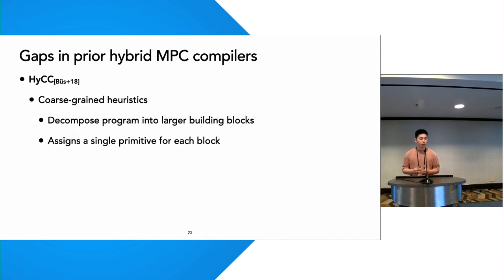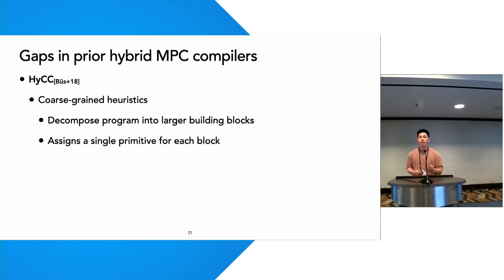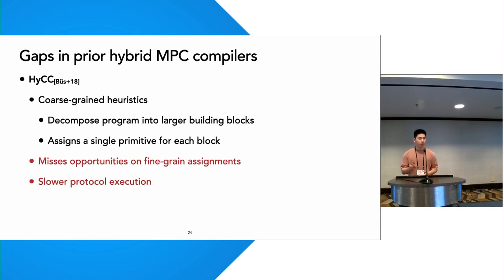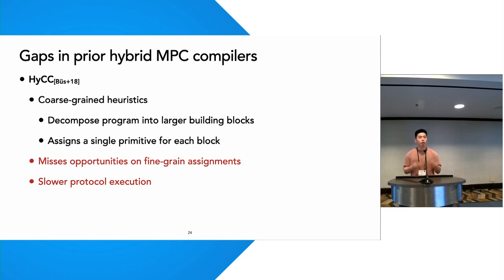One approach proposed by HiCC to solve the hybrid protocol assignment problem is to use coarse-grained heuristics to decompose a program into larger building blocks, then assign each block a single primitive. However, this approach misses opportunities for finer-grained assignments, because these larger building blocks can be composed of multiple MPC primitives and only one primitive is assigned to each block, which can lead to slower overall protocol execution time.